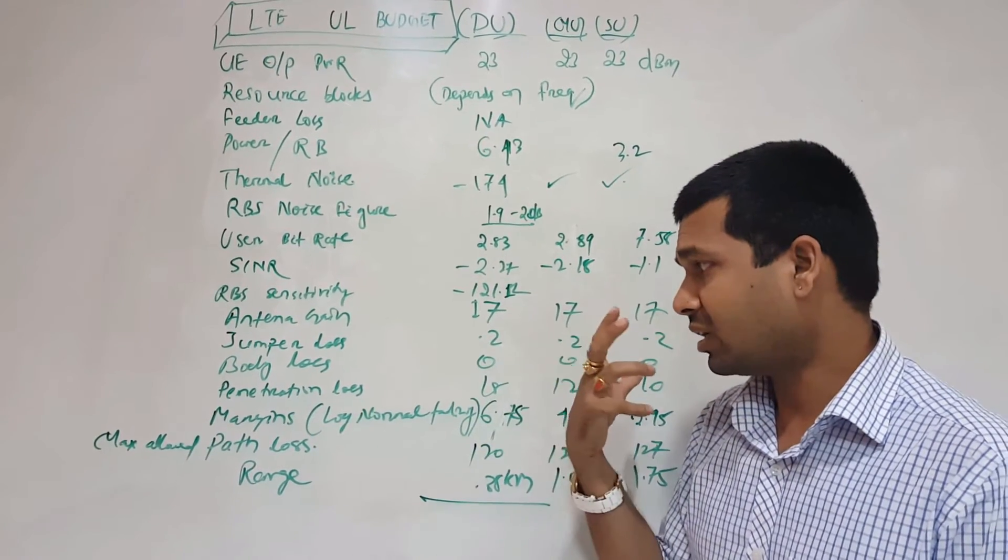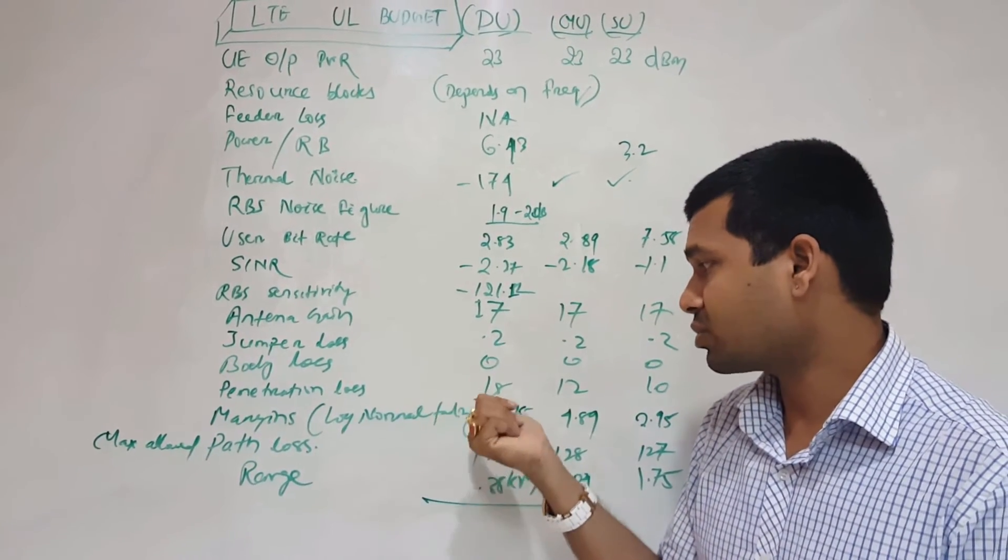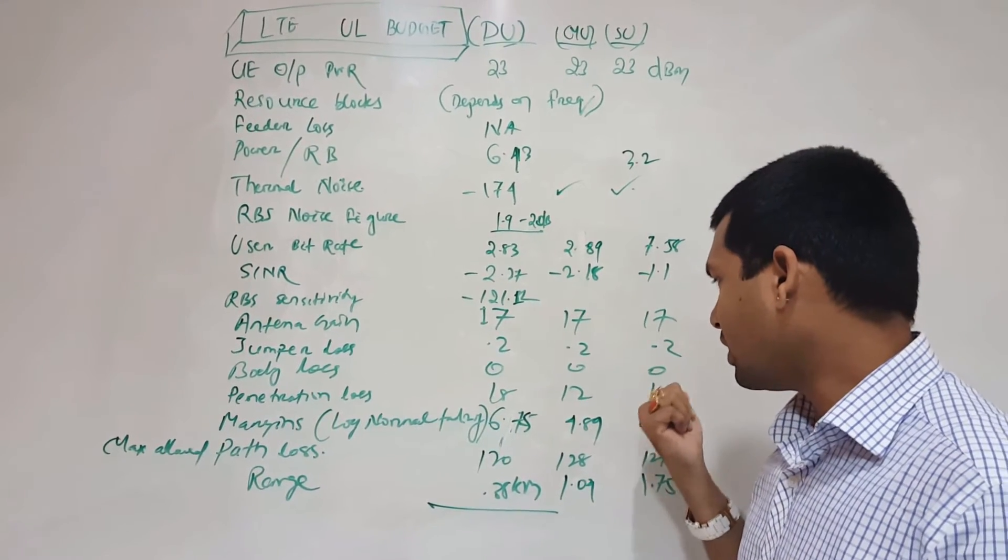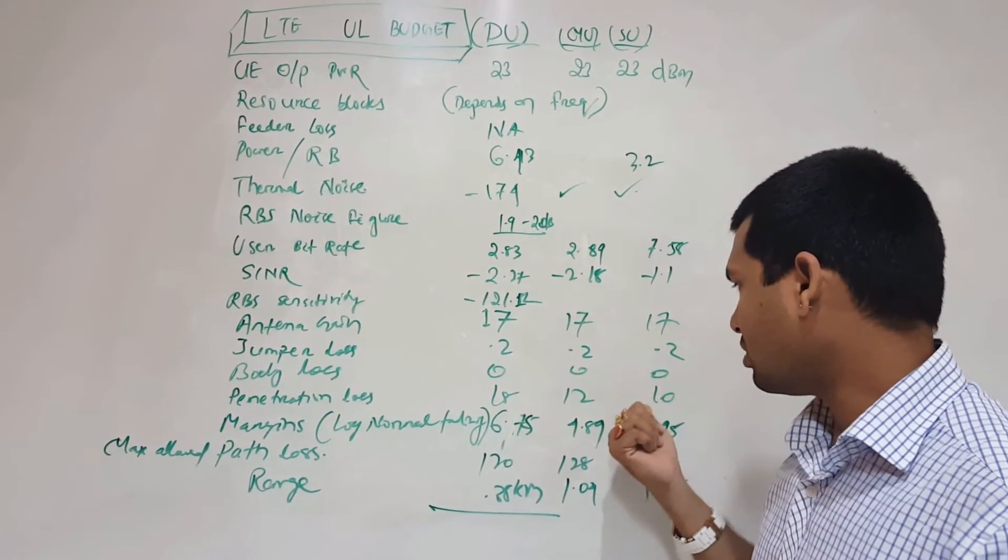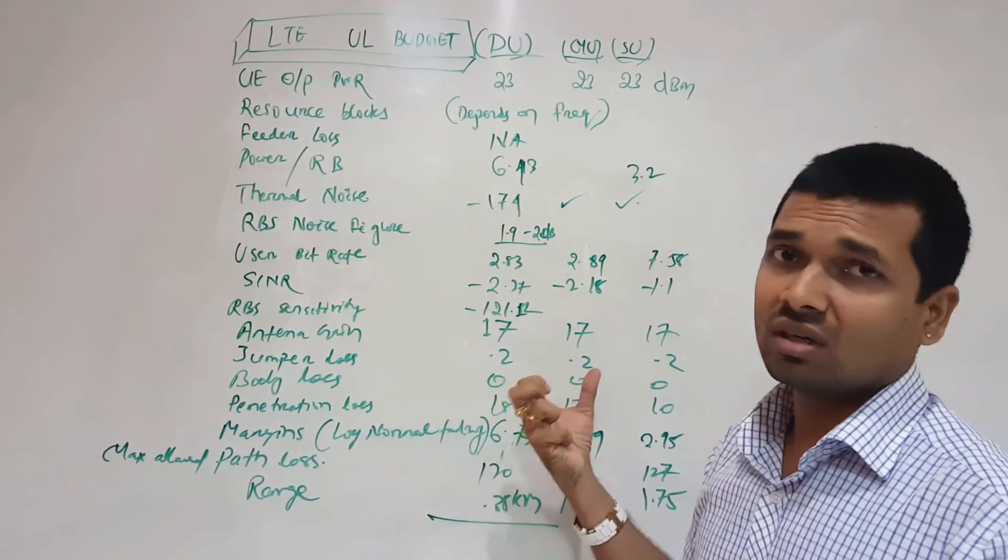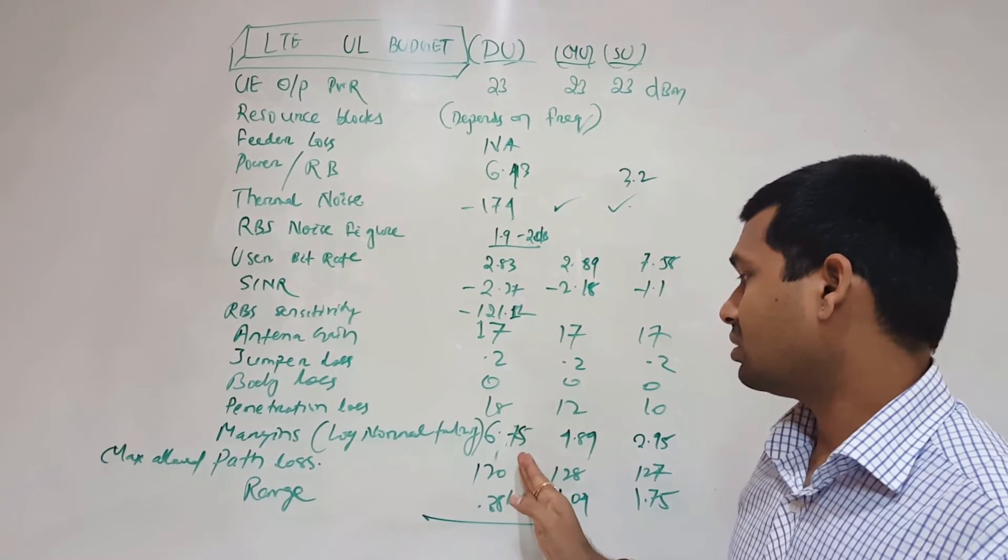For suburban or rural area it would be max 10 dB. Then other margins like log normal fading, 6.75 to 2.95, so 6.75 for dense urban.